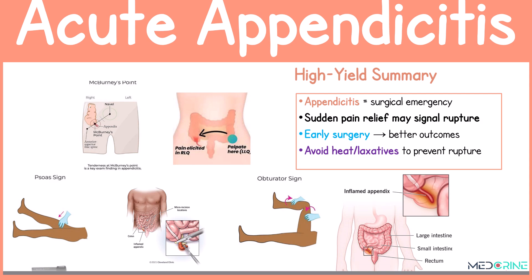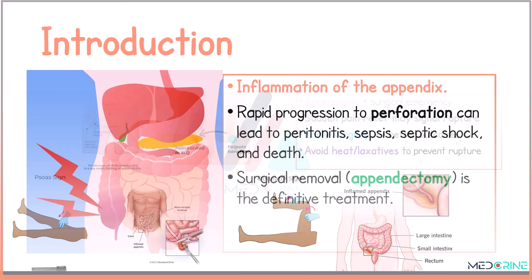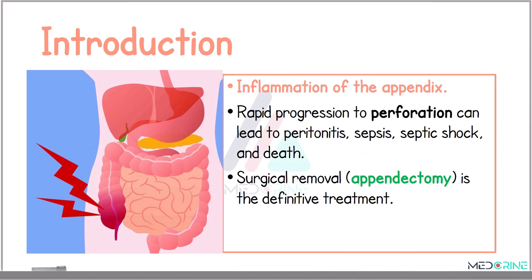Welcome. Today we shall be looking at acute appendicitis. Acute appendicitis is the inflammation of the vermiform appendix, which is a small finger-like projection from the cecum. The condition progresses rapidly and without timely treatment, it can lead to serious complications, for example perforation of the appendix, peritonitis, sepsis, septic shock, and even death. The definitive treatment of acute appendicitis is surgical removal of the appendix, known as appendectomy.